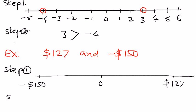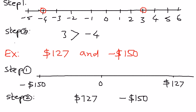Therefore, in step number 2, we want to place the correct inequality symbol between $127 and negative $150. $127 is greater than negative $150, and that is the correct inequality symbol we want to place between these two numbers. This is how we use the inequality symbol to recognize greater than or less than between two numbers. In my next presentation, we shall see real world applications of some more of these integer numbers.